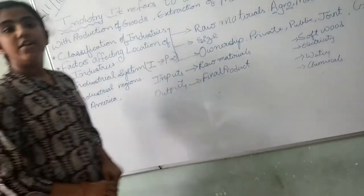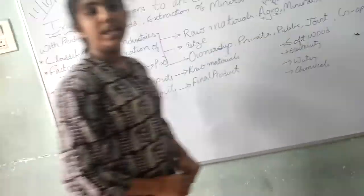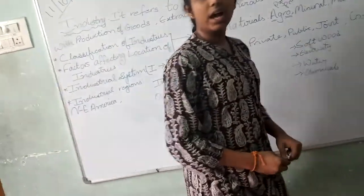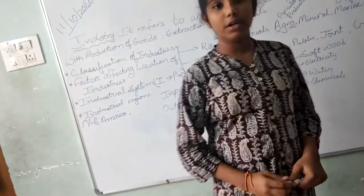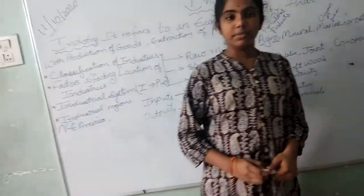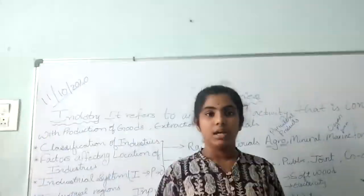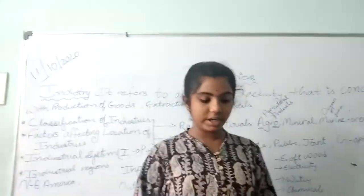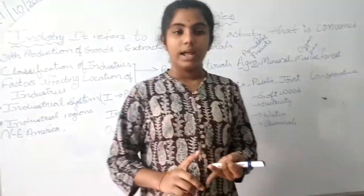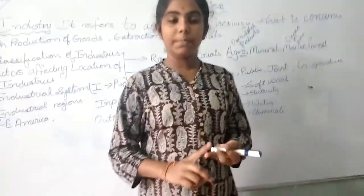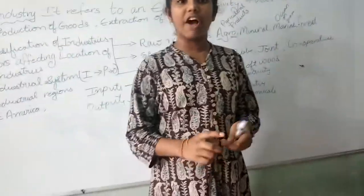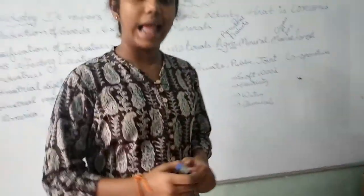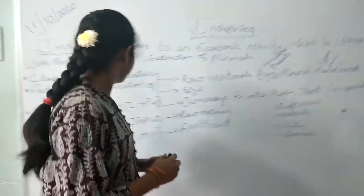Coming to factors affecting location of industry. The main factors are: transport system, land and raw materials required, power supply, labour and capital market, and government activities.